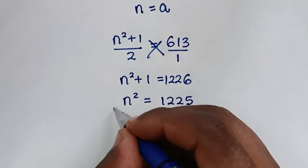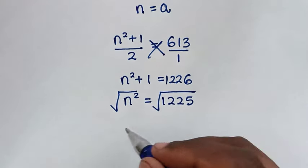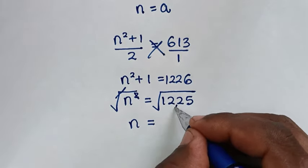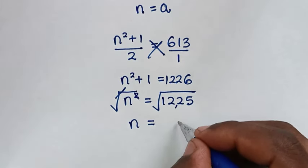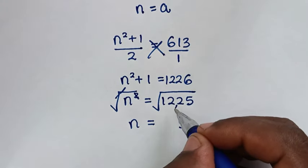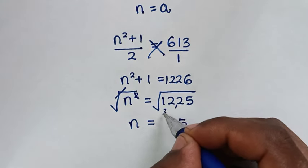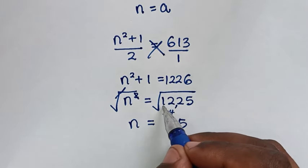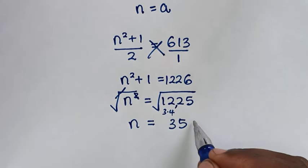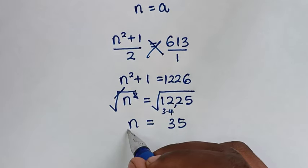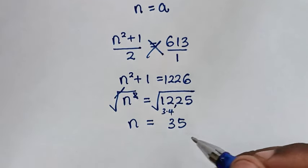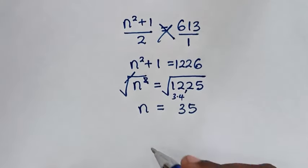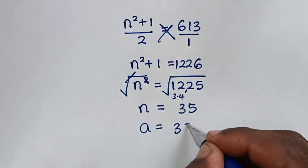To get n, we apply the square root on both sides. The square root of 1225 is 35, so n is equal to 35. Since n is equal to a, we also get a is equal to 35.